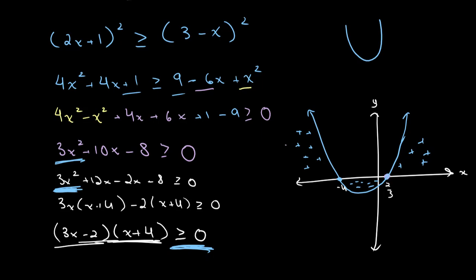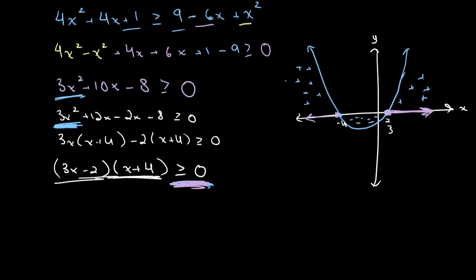So from x equals 2 over 3 and increasing, the graph is always greater than or equal to zero, and from x equals negative 4 going left, the y-value is always positive as well. Therefore we can write the solution: x is less than or equal to negative 4, or x is greater than or equal to 2 over 3. And this is our final answer.